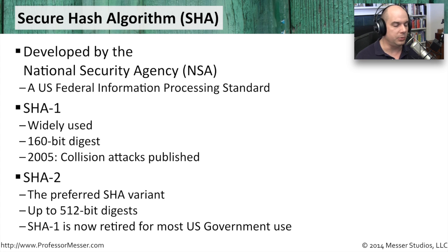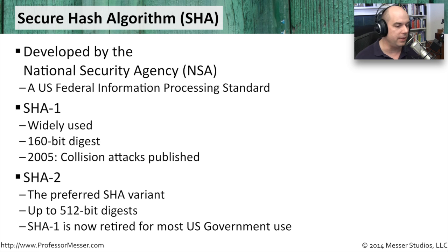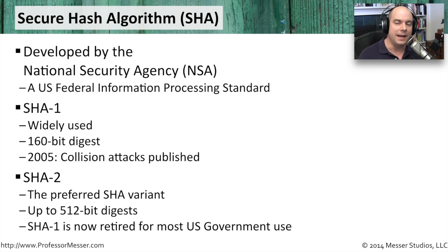So the natural progression was to create something better, and SHA-2 was released. This is now the preferred variant of the SHA hash algorithm. It produces a larger digest of 512 bits, with the idea that a longer bit length makes it more difficult to find collisions between different hashes.